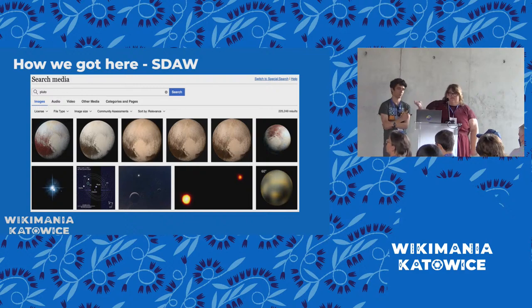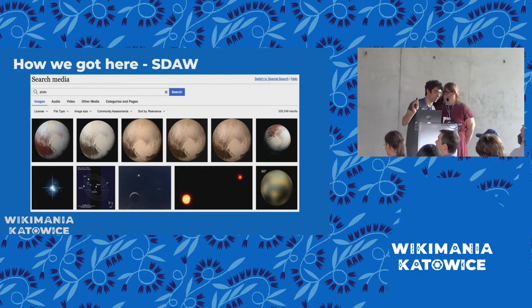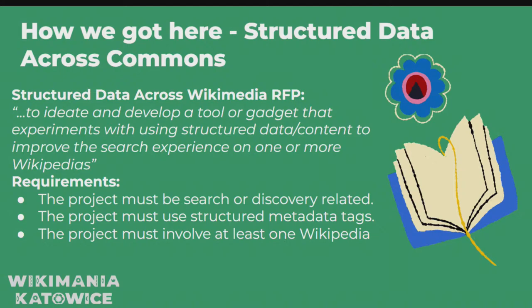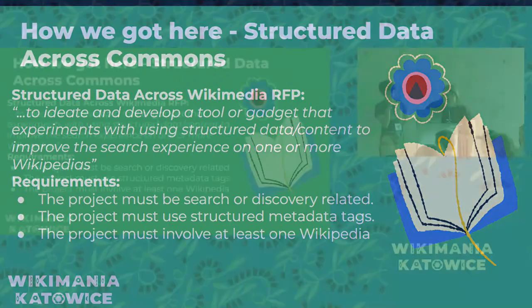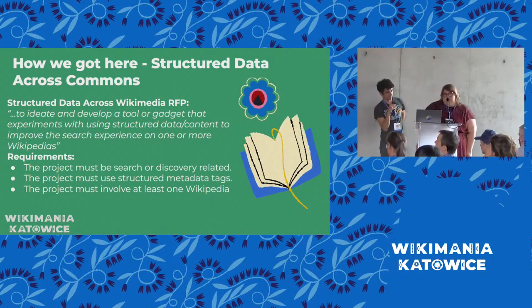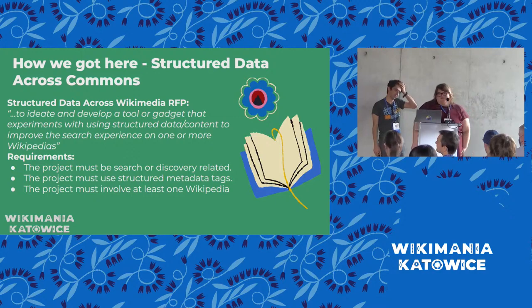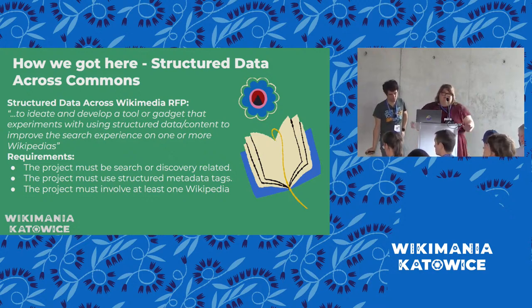This is how the search changed through structured data on Commons. The default search on Commons now uses structured data to pull up the most relevant photos. The goal was to develop a tool or gadget that experiments with using structured data to improve the search experience on one or more Wikipedias — and this one does it on all. It must be search or discovery related, must utilize structured metadata tags, and must involve at least one Wikipedia. This one involves all of them.